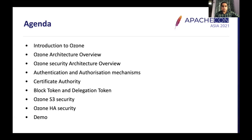Let's talk about the agenda first. We will start with an introduction to Ozone, then go over the Ozone architecture, followed by the Ozone security architecture. Then we will briefly talk about authentication and authorization mechanisms in Apache Ozone, touch upon certificate authority, block tokens and delegation tokens, the Ozone HA security model, and finally conclude with a demo.